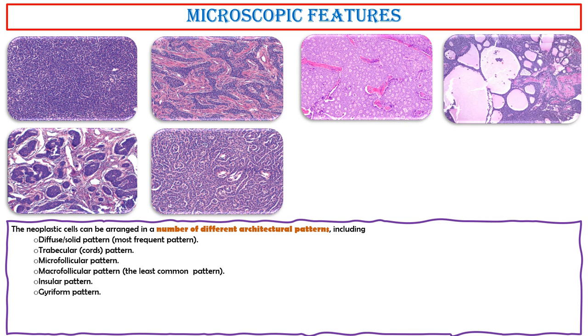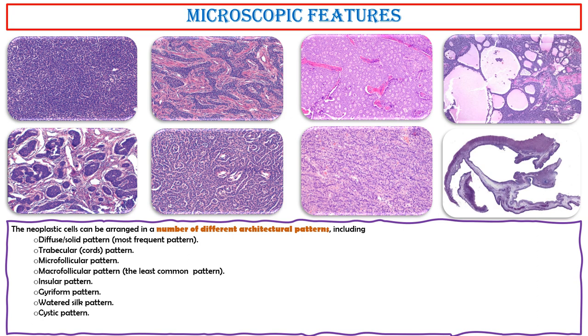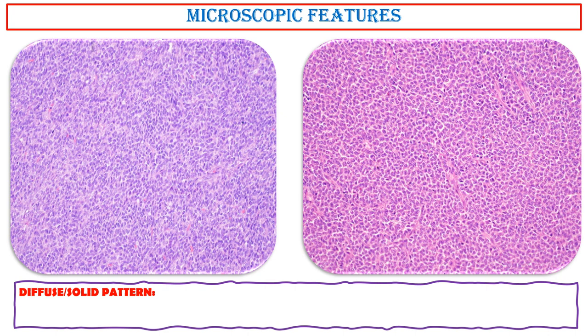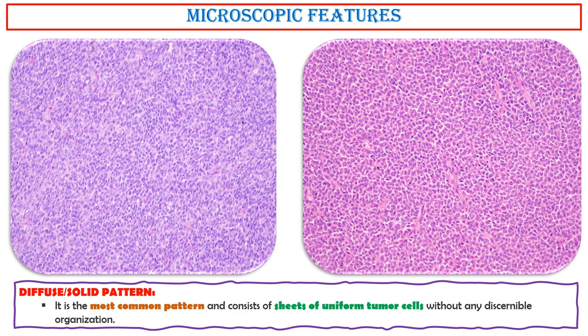Additional patterns include the insular pattern, gyriform pattern, watered silk pattern, and cystic pattern. The diffuse solid pattern is the most common pattern and consists of sheets of uniform tumor cells without any discernible organization.